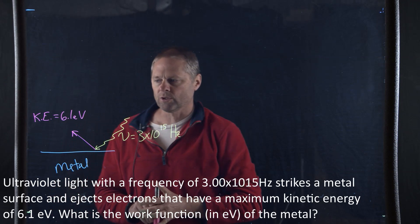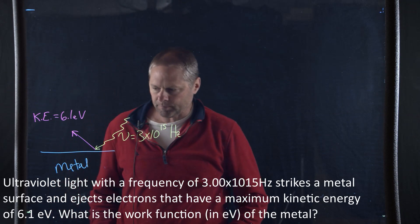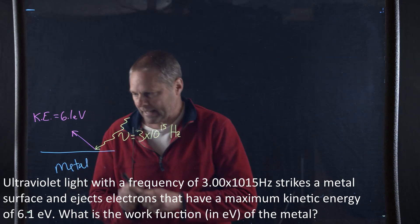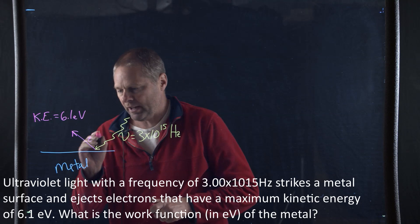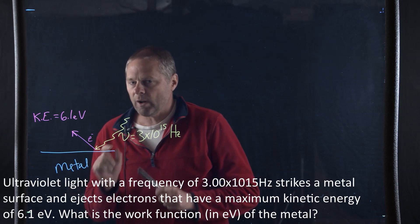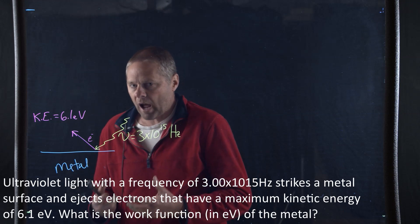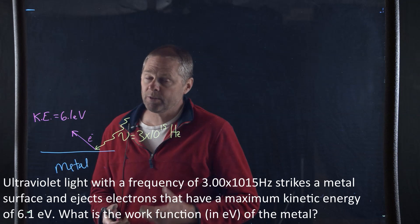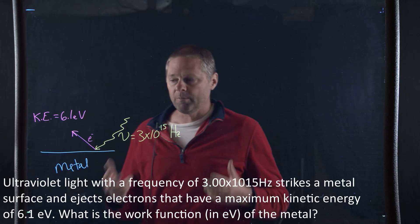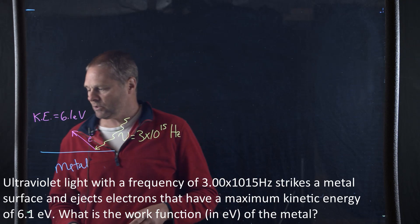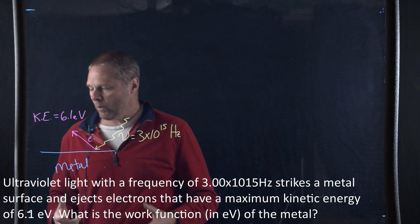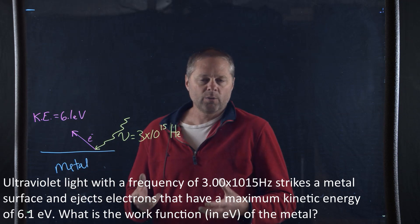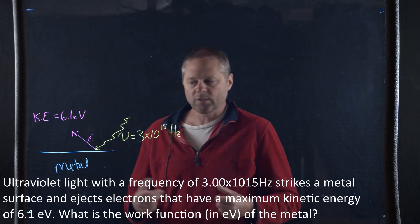That electron is going to have a kinetic energy equal to 6.1 electron volts, and we'll convert this into joules. What's happening is, as this electron is being photoejected, the atom itself doesn't want to give up that electron — it wants to hold on to it, particularly if it's a core-level electron very close to the nucleus. So what we want to do is determine the work function of the metal — basically, how much does that metal want to hold on to that electron?